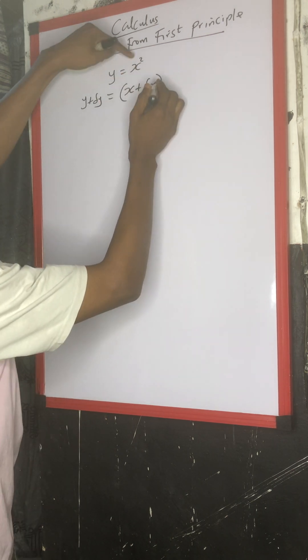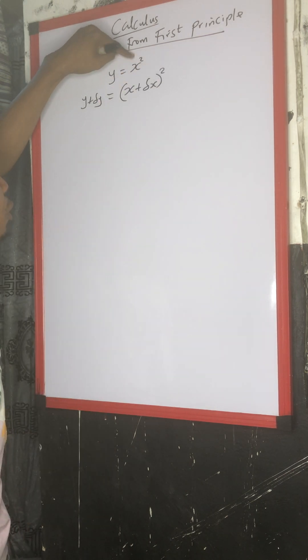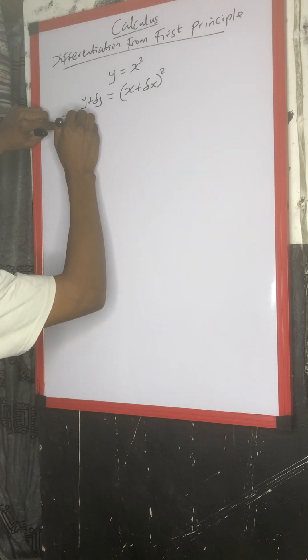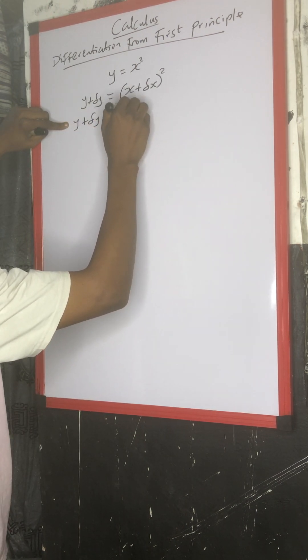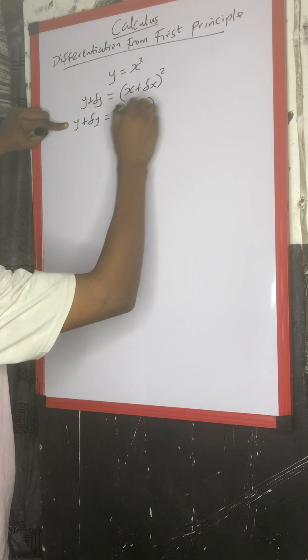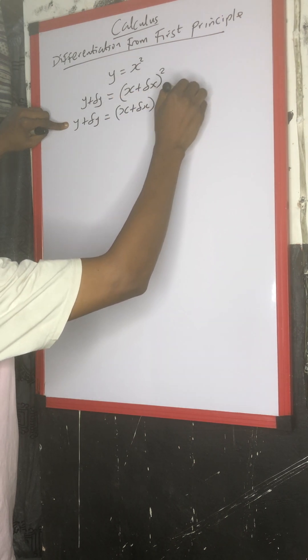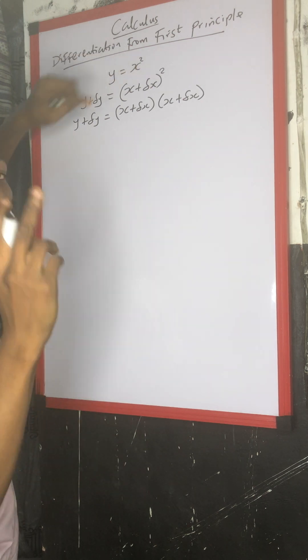Then raised to the power of 2. So from there, this sentence y plus change in y equals to, we have s plus change in x, then s plus change in x. We have it twice. So from there, we have y plus change in y, then equals to,